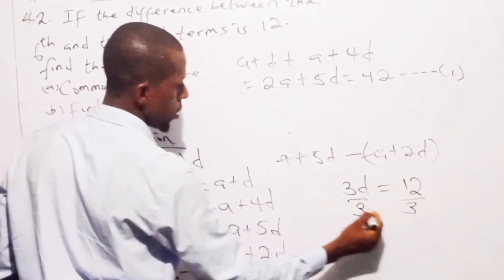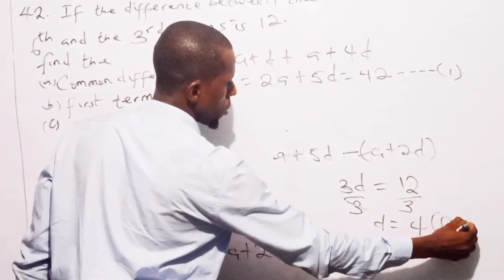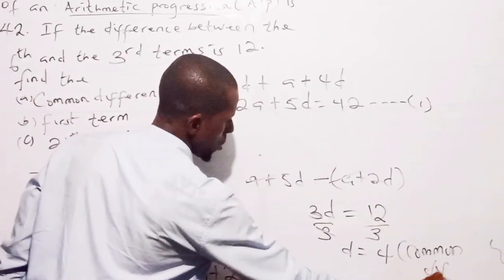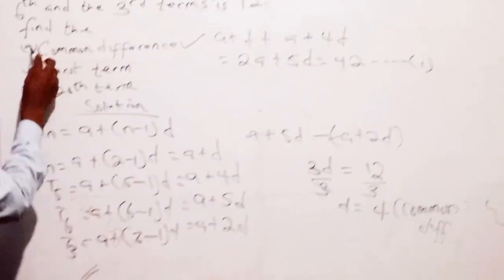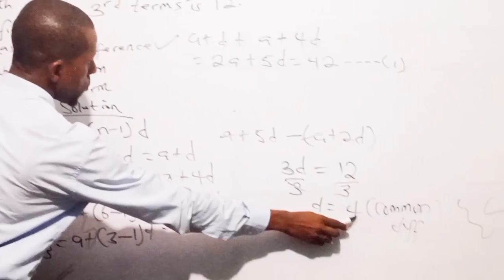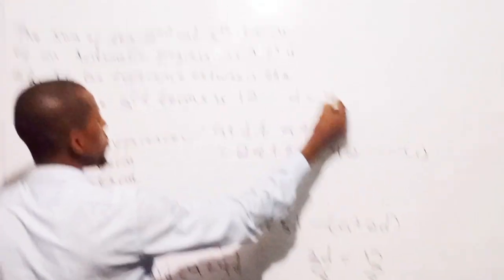Which is the common difference in AP. So we have found this common difference, which is 4. So when we know our common difference to be 4, we can now proceed to the second and get the first term.